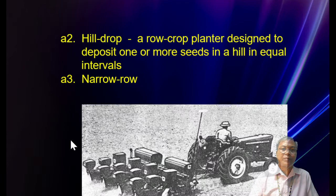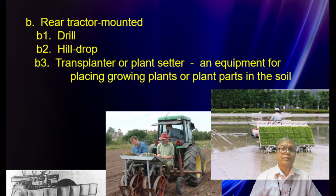We have the hill drop, a row crop planter designed to deposit one or more seeds in a hill at equal intervals. We also have narrow row and rear tractor-mounted types, which are also of a drill type. Then there is the transplanter or plant setter — equipment for placing growing plants or plant parts in the soil.